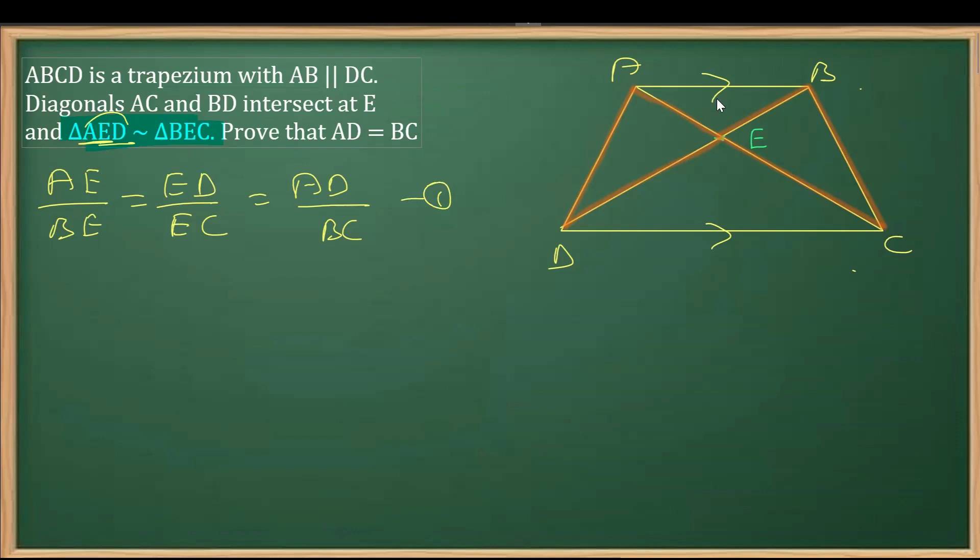Now we're going to prove two other triangles similar. This time I will prove triangle AEB is similar to triangle DEC. We can see clearly that angle 1 equals angle 2 by alternate interior angles, and angle 3 equals angle 4 for the same reason.